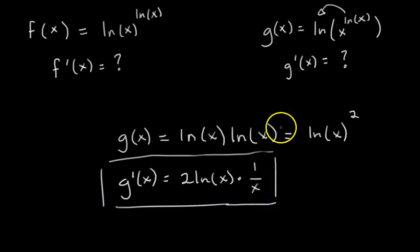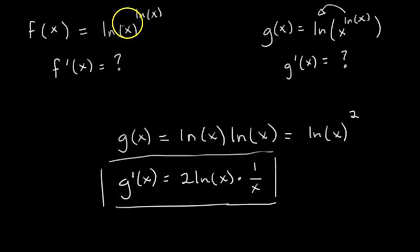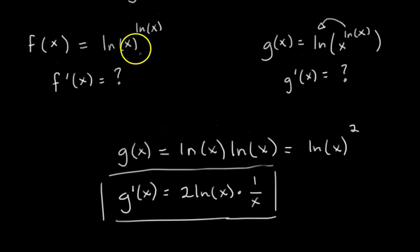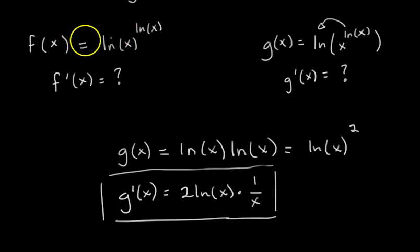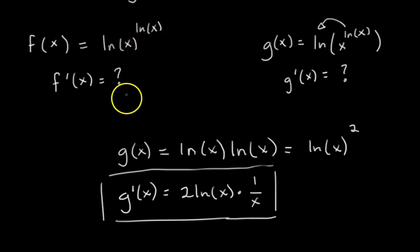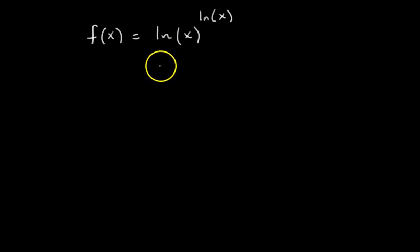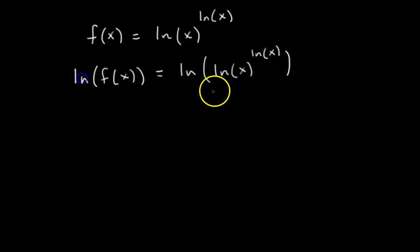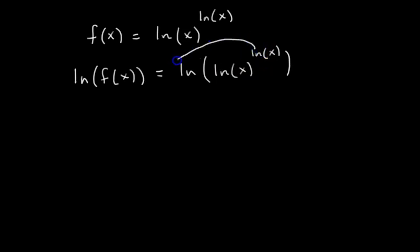So g of x wasn't that bad to differentiate. Now let's go back to f of x and see how we can tackle this, knowing that we're not allowed to bring this ln of x down in front. Whenever you have a function of x raised to another function of x and you want to take the derivative of that whole thing, you have to use what's called logarithmic differentiation. What that entails is: before you do any differentiation, you're going to take the natural log of both sides. That's going to allow us to bring this exponent down and turn it into a product rule question.